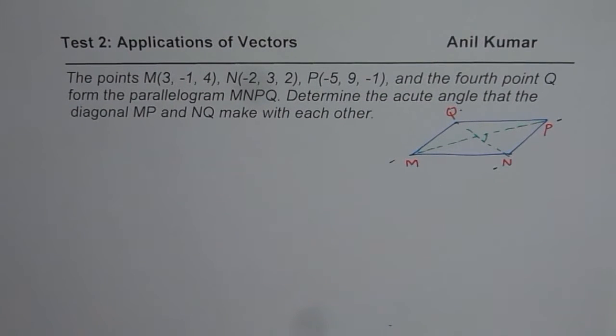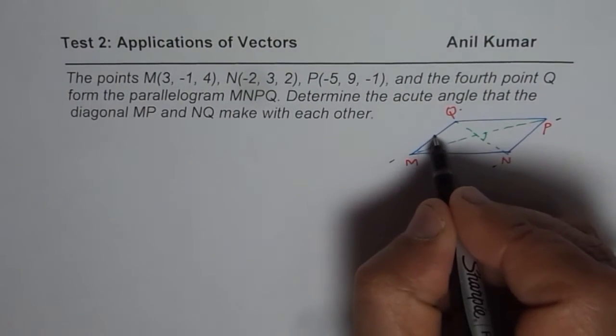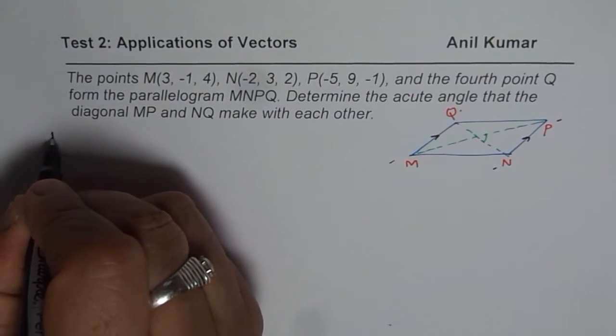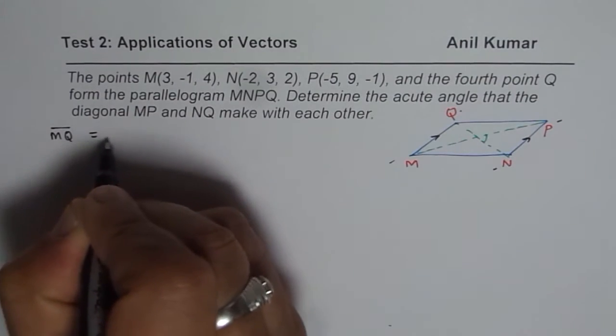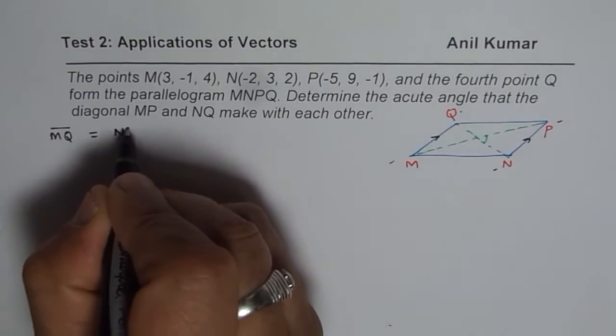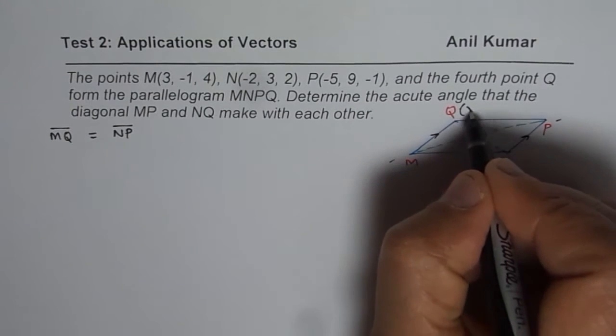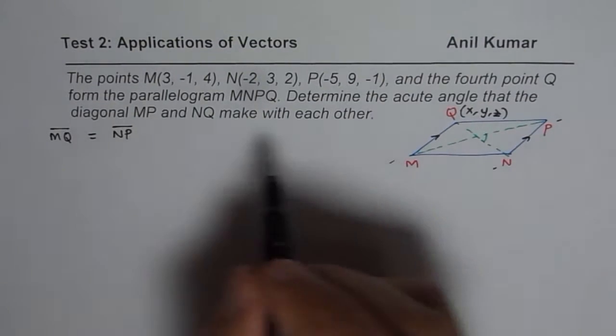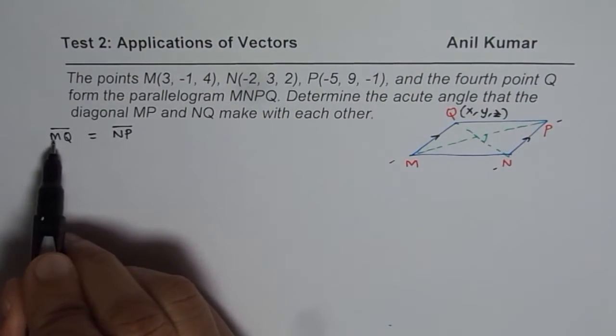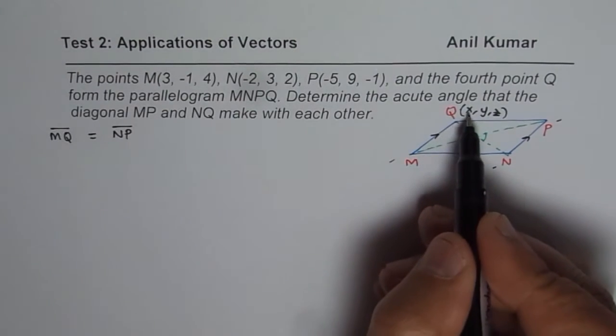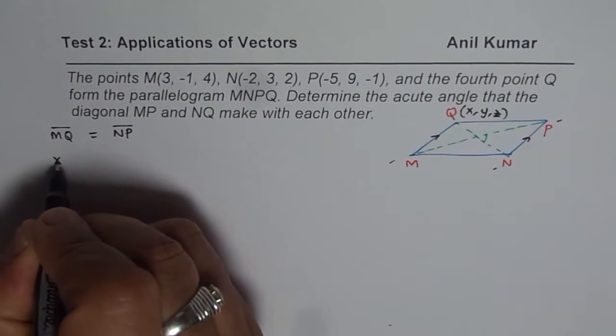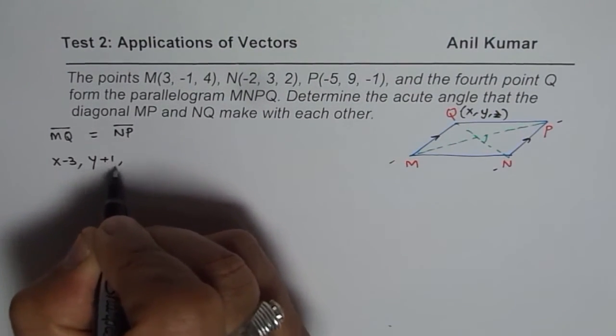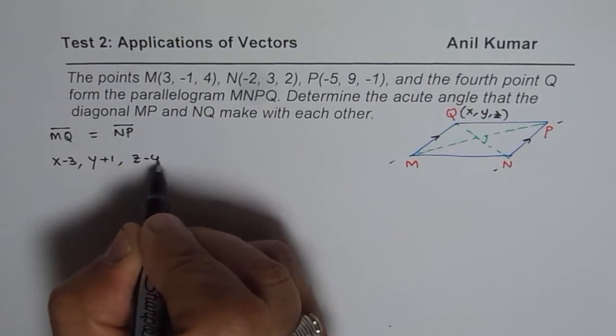So first step is to find the point Q, which you can find because they are parallelogram. These two sides are parallel and their magnitude is same. Therefore, the vector MQ should be equal to vector NP. So let us assume Q to be (x, y, z) and then we will find these points. So M is (3, -1, 4). So what is MQ? So it will be (x - 3, y + 1, z - 4). So that is MQ.